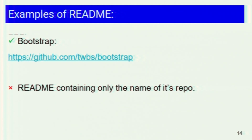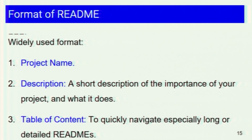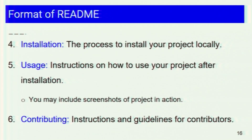A bad example of a README would be having only the name of the repository in one line. Regarding format — though there's no standardized format published anywhere, most users include minimally: project name, a description sharing the importance and function of the project, a table of contents to navigate detailed READMEs, an installation section for the process to install locally, and usage instructions on how to use it after installation — screenshots of the project in action can be included here.